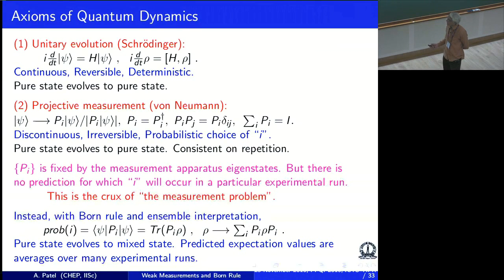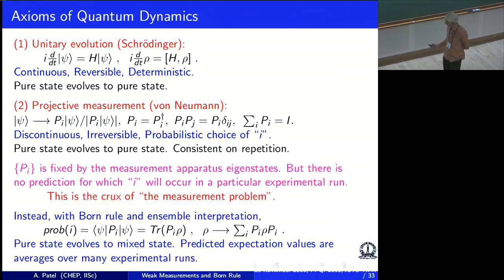So this is a dichotomy between unitary deterministic evolution and probabilistic projective evolution. Many people have tried to merge these things together without success. In particular, there is no way to take a continuous reversible process and turn it into a discontinuous probabilistic process.